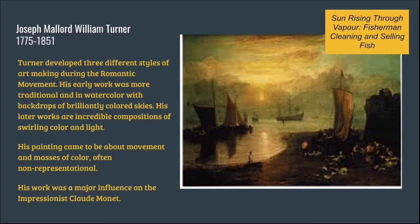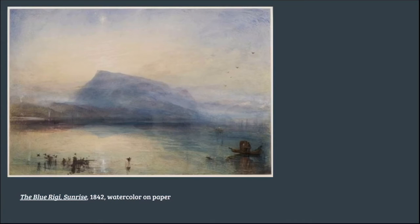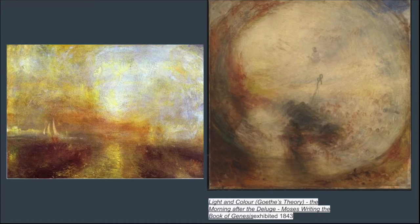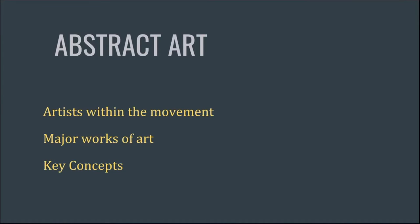With Turner's artwork we see a lot of different styles. His earlier work was more traditional watercolor with brilliantly colored skies, whereas his later works are incredible compositions of swirling color and light. His painting really came to be about movement and masses of color that were often non-representational, though we consider him the first real abstraction in art, his work is not necessarily completely abstract.